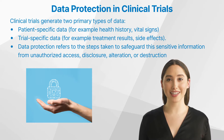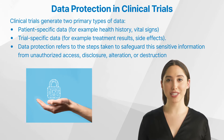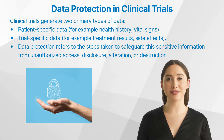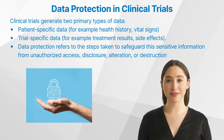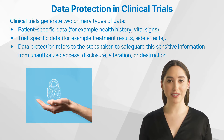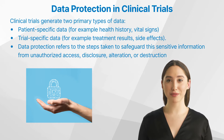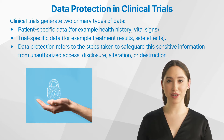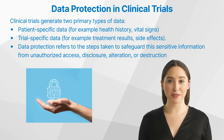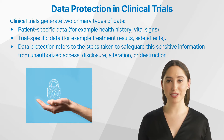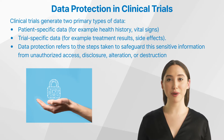But what is data in clinical trials? Clinical trials generate two primary types of data: patient-specific data — for example, health history and vital signs — and trial-specific data — for example, treatment results and side effects. This data is crucial as it forms the basis for scientific conclusions, regulatory decisions, and healthcare policies.